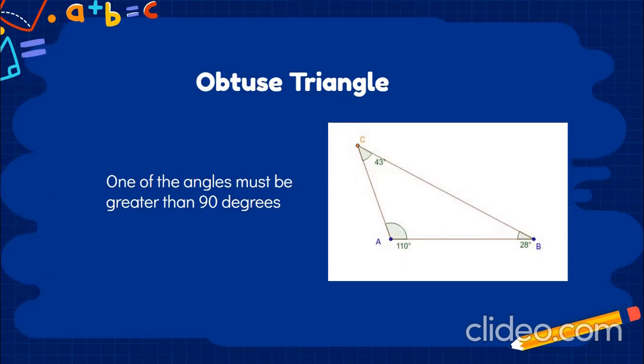Can anyone tell me which of these angles makes it obtuse? Tiffany? A 110-degree angle. Exactly — angle A has 110 degrees, which is greater than 90.